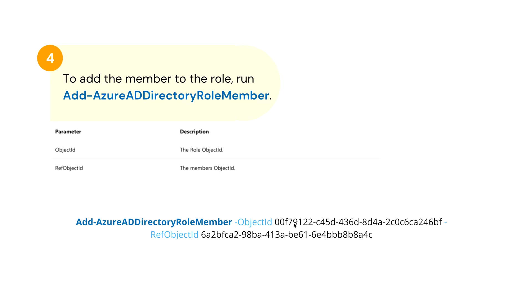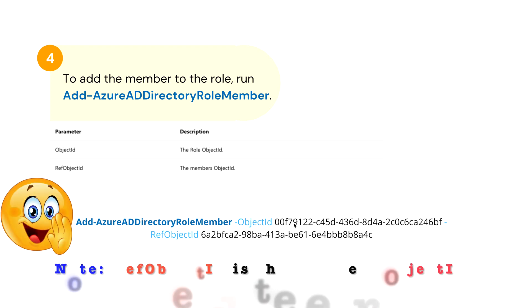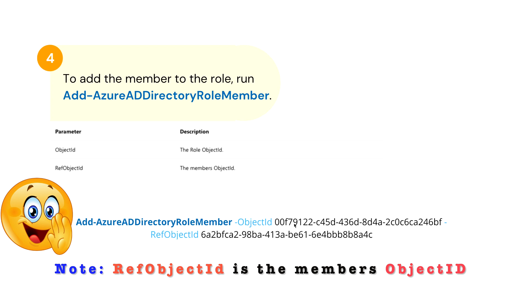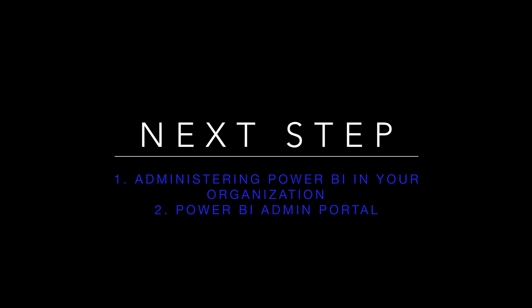The last step is to add the member to the role using the command 'Add-AzureADDirectoryRoleMember', providing both the object ID and the reference object ID. Once complete, that user will be added to the Power BI admin role. The next part of this series will cover administering Power BI within your organization and learning more about the Power BI admin portal.